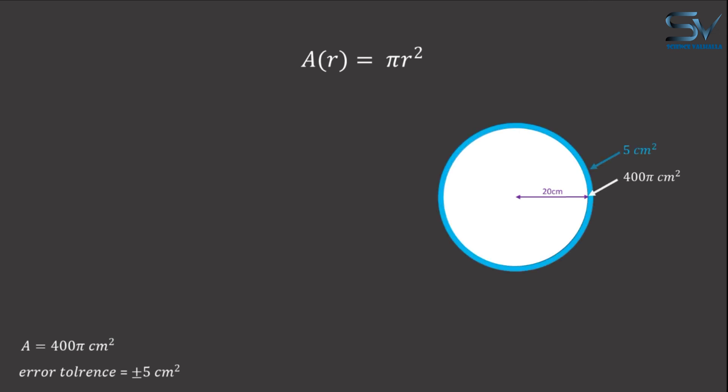Minus 5 square centimeters error tolerance means that the area can be decreased by 5 square centimeters. This means the area of this disk should lie between these two limits.